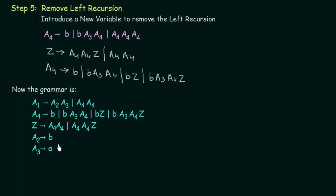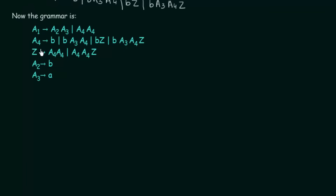Now let us check if these are in Greibach Normal Form or not. Starting from A1: A1 gives A2, A3 and A4, A4. But in GNF we are not allowed to have a variable in the beginning — we need a terminal symbol. So we need to modify A1. A2 is causing the problem, so I replace A2 with B. That gives A1 gives B, A3 which is now in Greibach Normal Form. But A1 also gives A4, A4 which is not in GNF because A4 is a variable in the beginning.